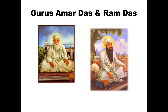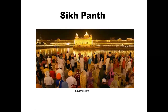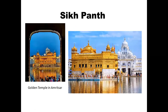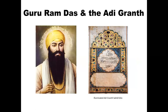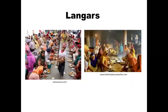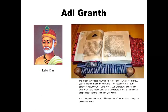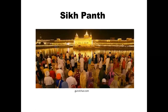The third and fourth gurus are Amar Das and Ram Das. They were thought to have actually established the city of Amritsar. This is a picture from a Diwali celebration in the city of Amritsar in India. The fifth guru, Arjun Dev, built the Golden Temple, which is pictured here in Amritsar. The Golden Temple is the most sacred shrine in all of Sikh tradition.